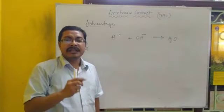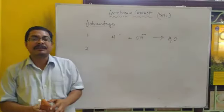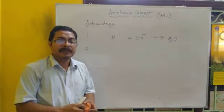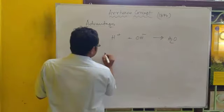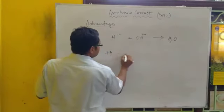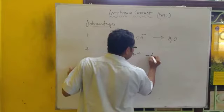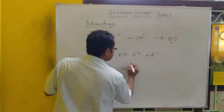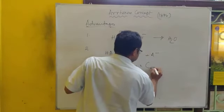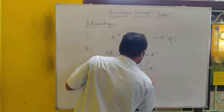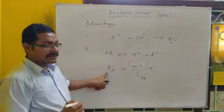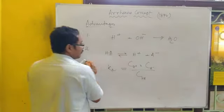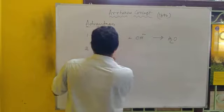Secondly, the strength of acids and bases could be expressed in terms of ionization equilibrium in this concept. For example, HA dissociates into H+ plus A-. The equilibrium constant—so the strength of acids are related to the ionization constant of this type of reaction in aqueous medium.